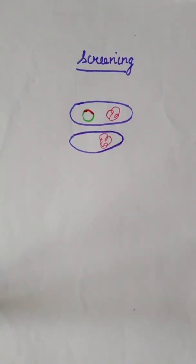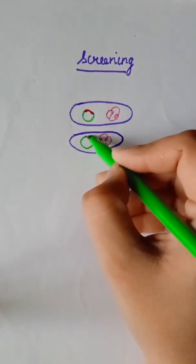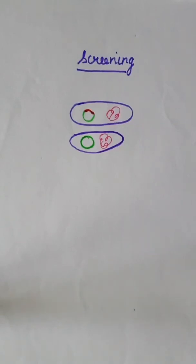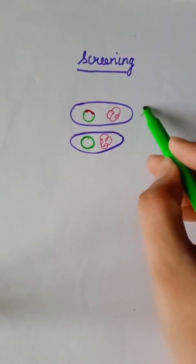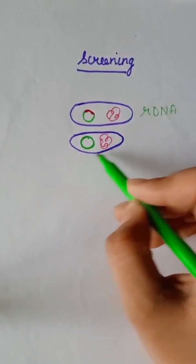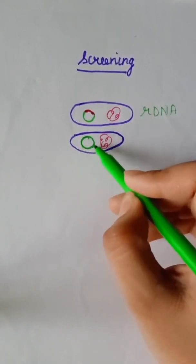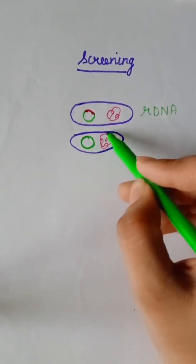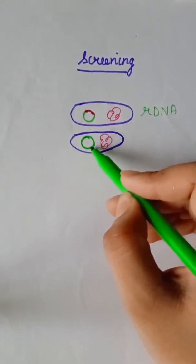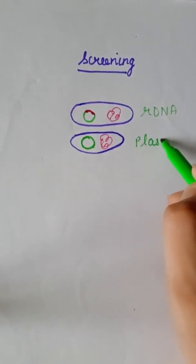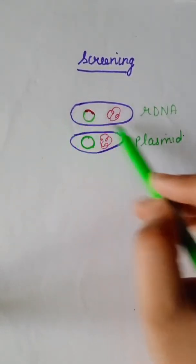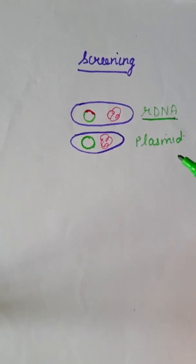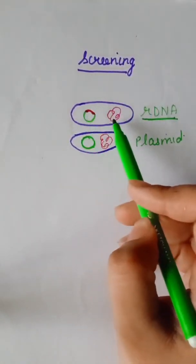It is also possible that in some cells, only the plasmid is transformed — that is, the plasmid is inserted directly without recombination. So we have cells with recombinant DNA, and cells where only plasmid transformation has taken place. The cells we need for further experiments are those with recombinant DNA. Our aim is to identify and select those cells.